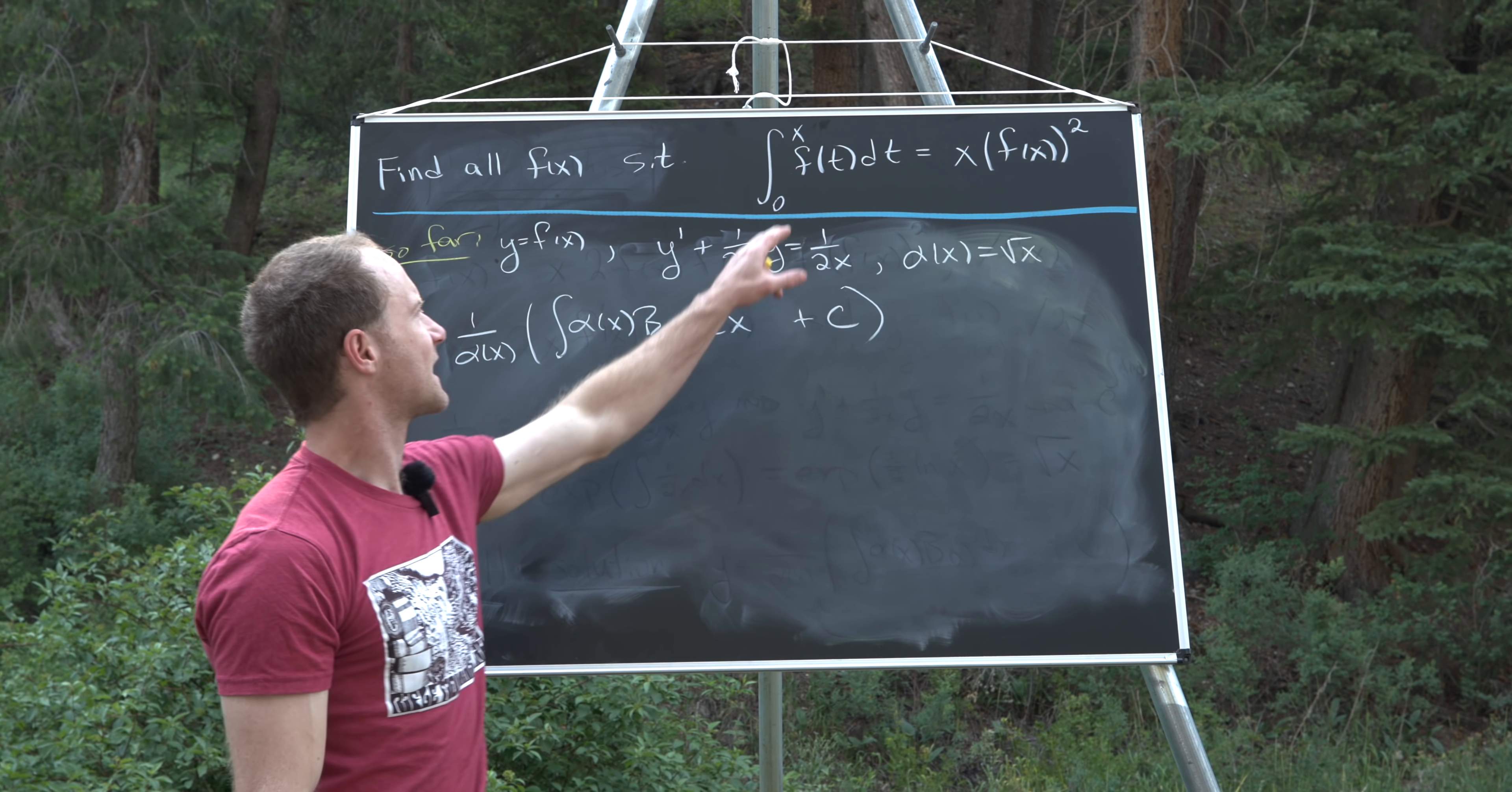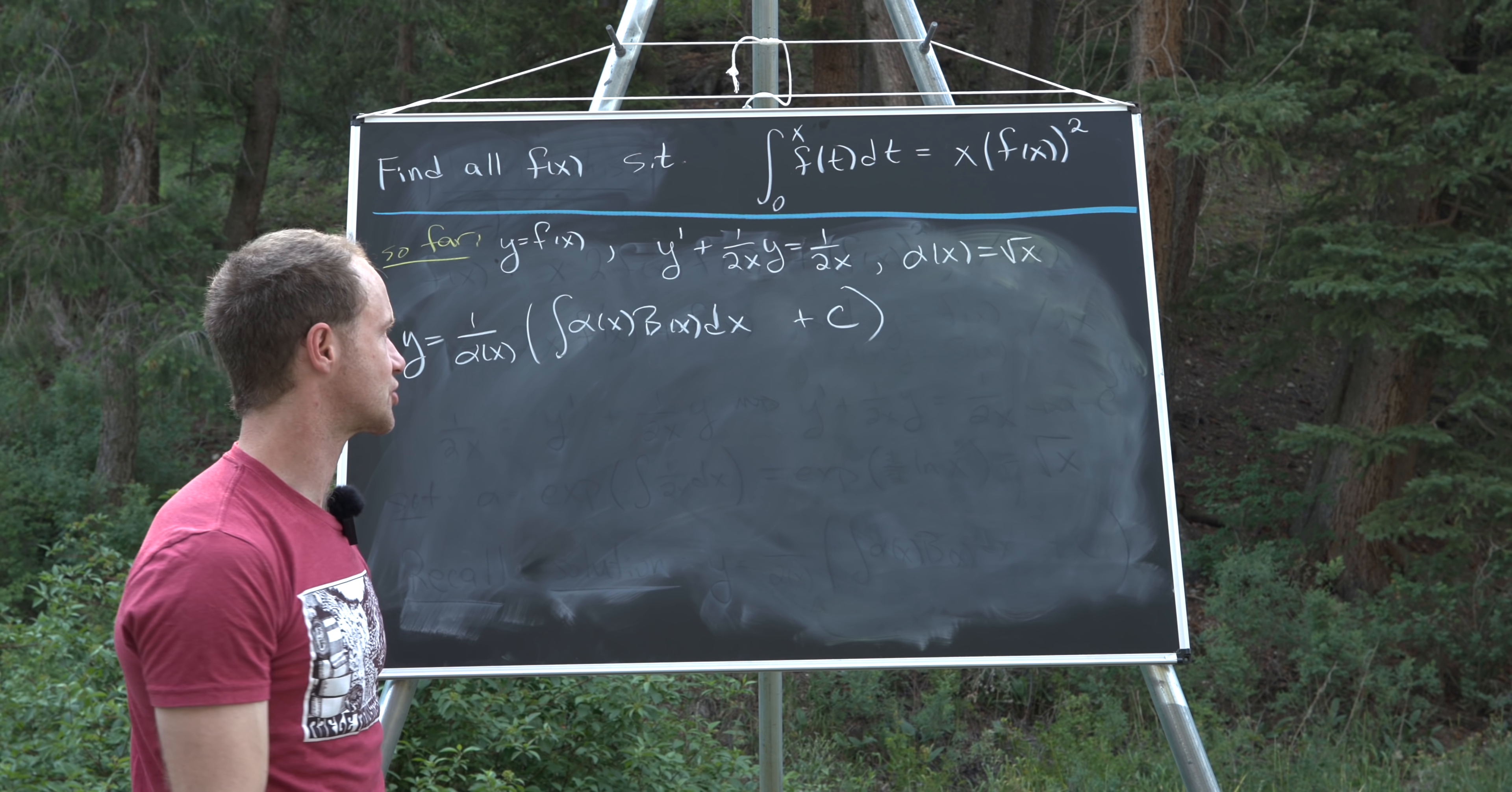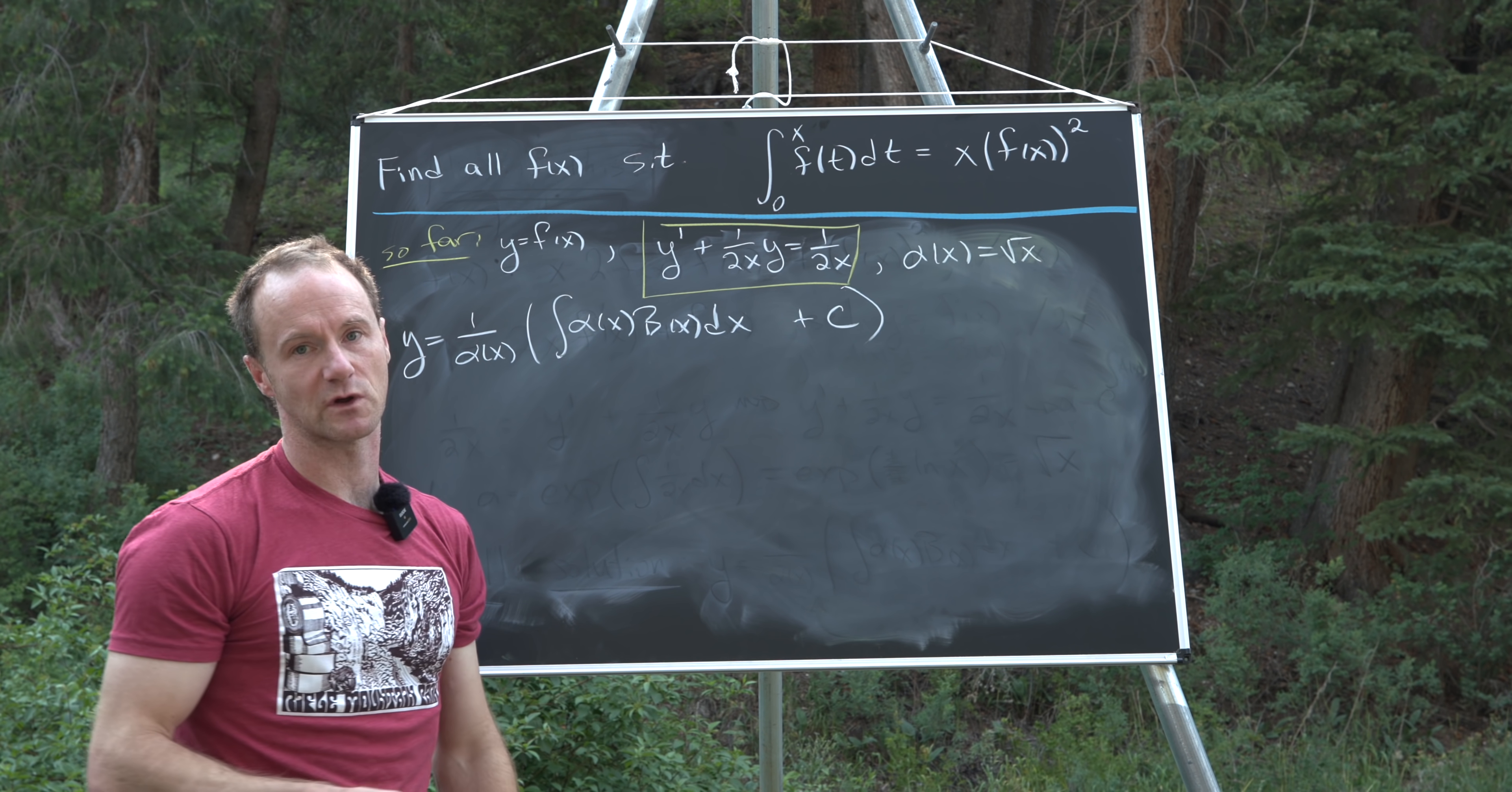So let's see where we were. We found out that our original function obeyed some sort of first order linear differential equation. And then after setting y equal to our goal function, we saw that that first order linear differential equation was given by y prime plus 1 over 2x times y equals 1 over 2x.